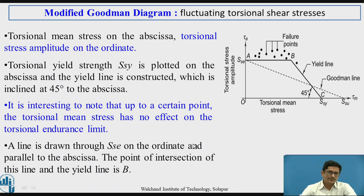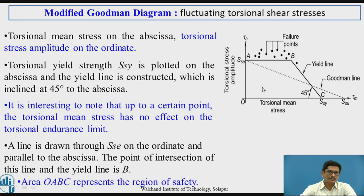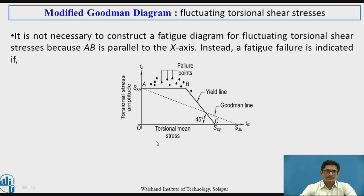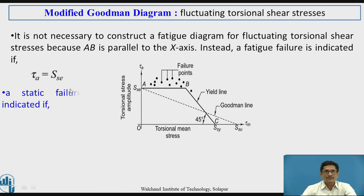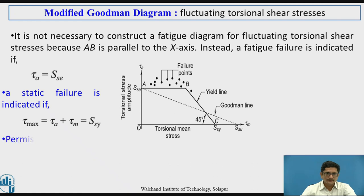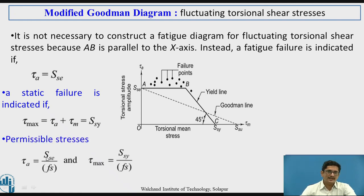AB is parallel to the x-axis. The point of intersection of this horizontal line and the yield line is point B. The area O, A, B, C represents the region of safety. It is not necessary to construct a full fatigue diagram for fluctuating torsional shear stresses because AB is parallel to the x-axis. Instead, a fatigue failure is indicated if TAU_A equals SSE, and a static failure is indicated if TAU_MAX equals TAU_A plus TAU_M equals SSY. The permissible stresses are TAU_A equals SSE divided by FS and TAU_MAX equals SSY divided by FS.